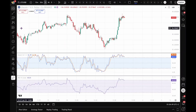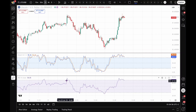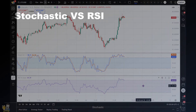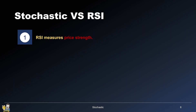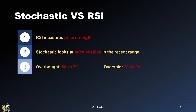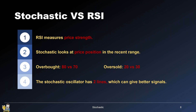Let's talk about the difference between the stochastic and the RSI. Here we've got the stochastic, and just below that, the RSI. They're both momentum oscillators and they pretty much look the same, so what's the actual difference? The RSI measures price strength, while the stochastic looks at the price position in the recent range. Another difference lies in the overbought levels: for the stochastic it's set at 80, while for the RSI it's 70. The same goes for the oversold levels — 20 for the stochastic and 30 for the RSI. Finally, the stochastic oscillator has two lines, which can provide better and clearer signals.